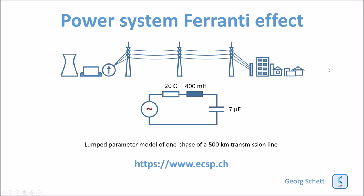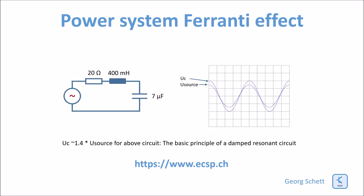The values of the individual components are exaggerated here. You can see how the output of this LC circuit is increased compared to the input voltage at the source. This is the basis for the effect. The resonance of this LC circuit leads to the voltage increase at the line end.